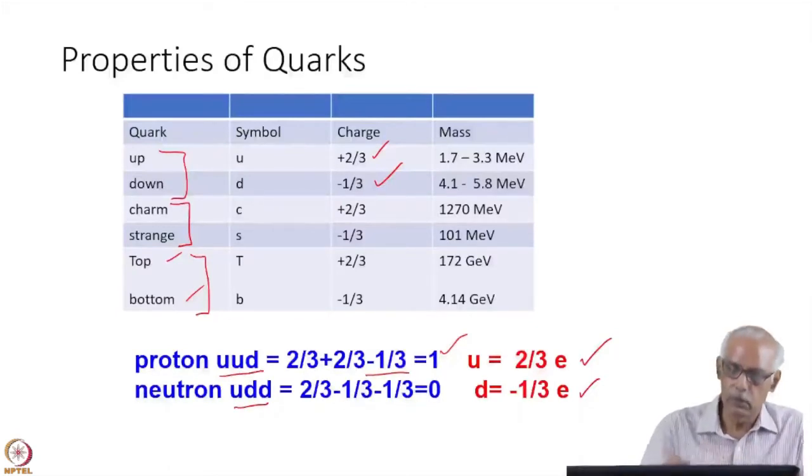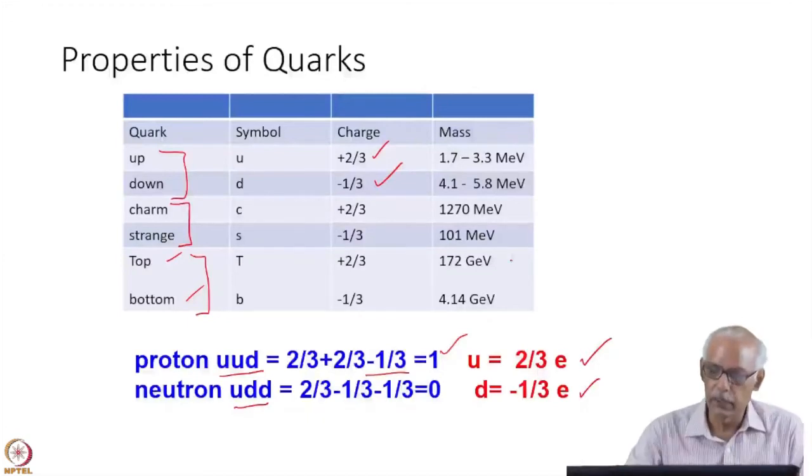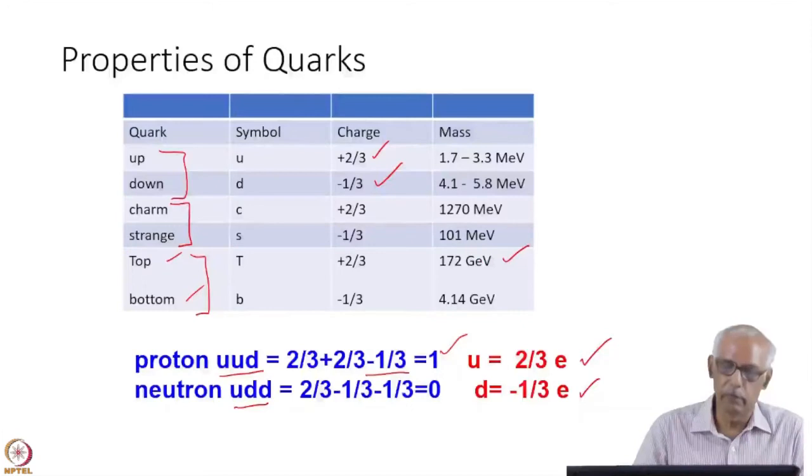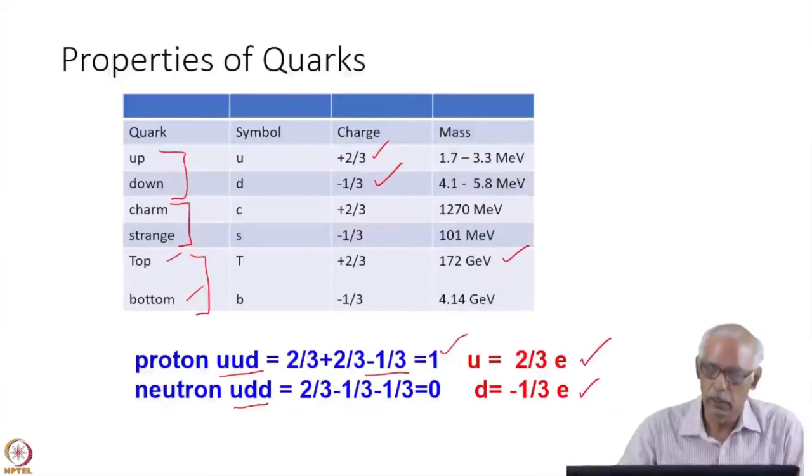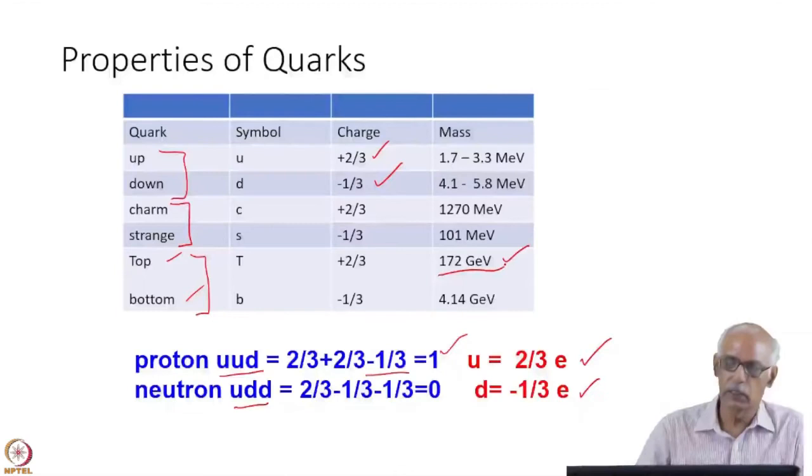And this top quark is the heaviest. You can see the masses. It is 172 GeV. And this was discovered at Fermilab accelerator, Tevatron. When the proton with the anti-proton beam collided, the mass was measured to be about 172 GeV. This is the heaviest particle.